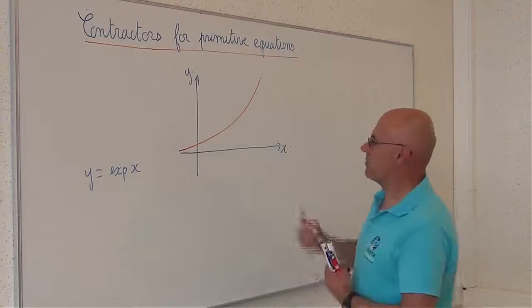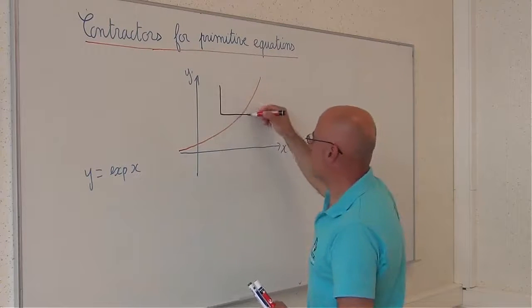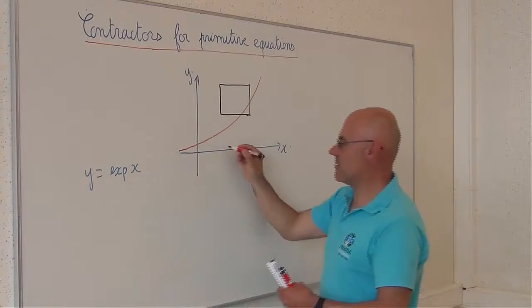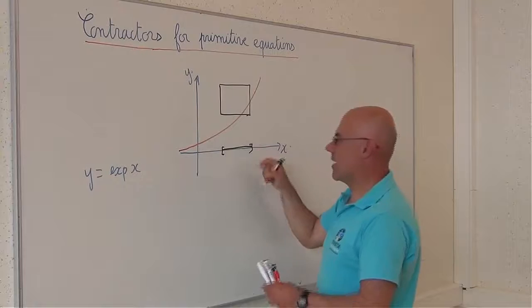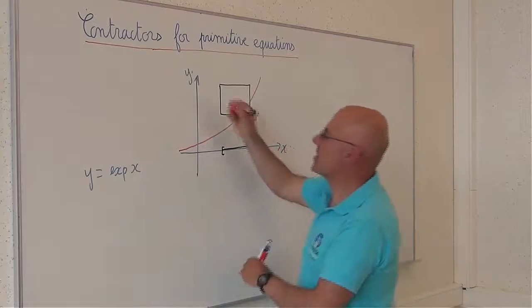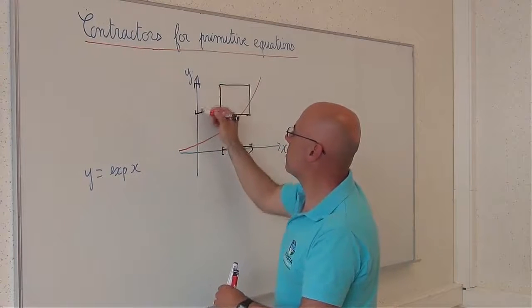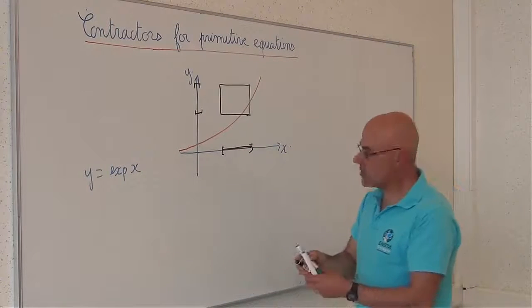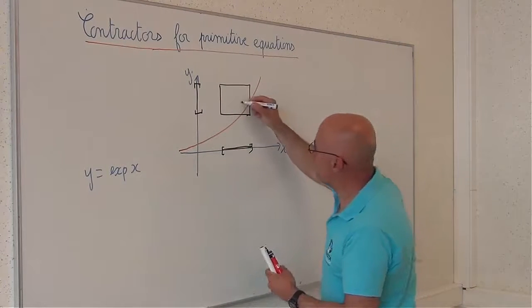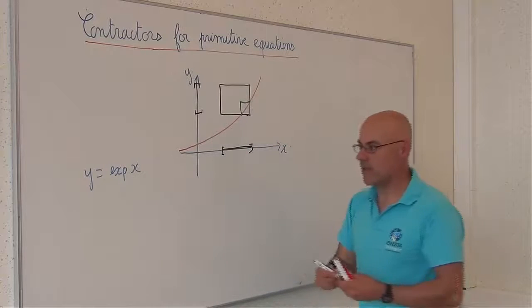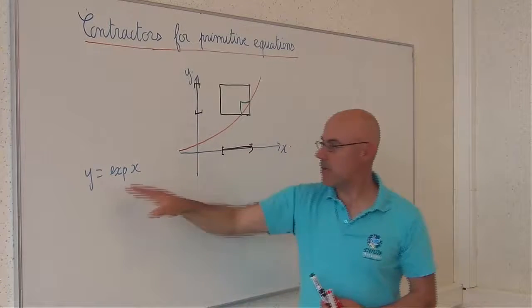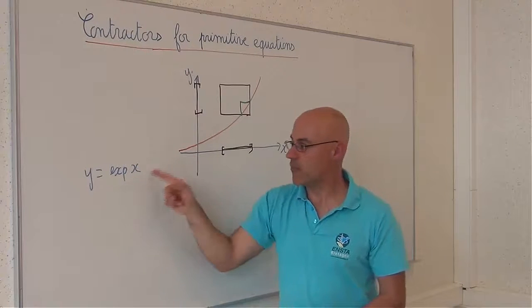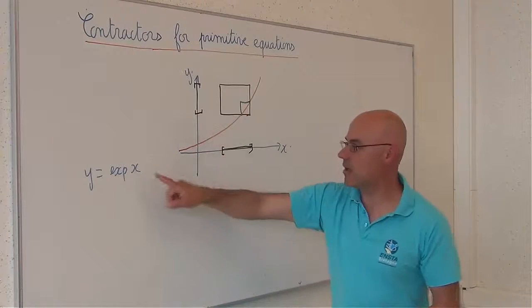The contractor corresponds to this. It takes a box as an input, this box, has an interval component for x, but also for y. And the optimal contractor amounts to compute this box. Let us apply the principle explained before to compute this optimal contractor.